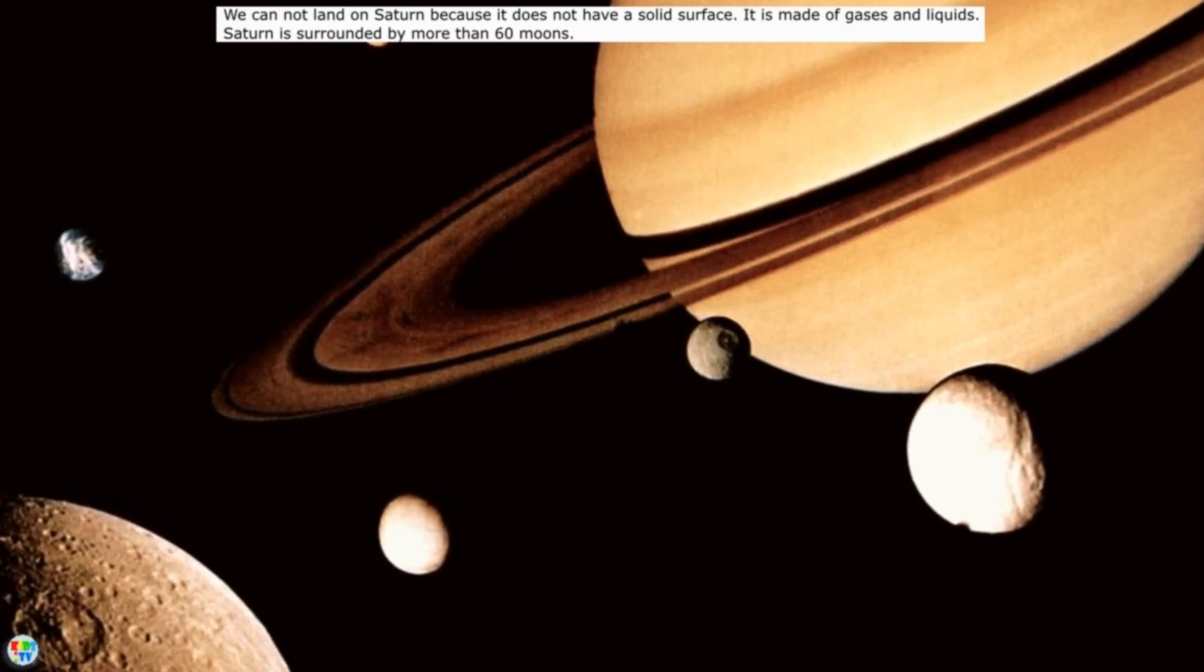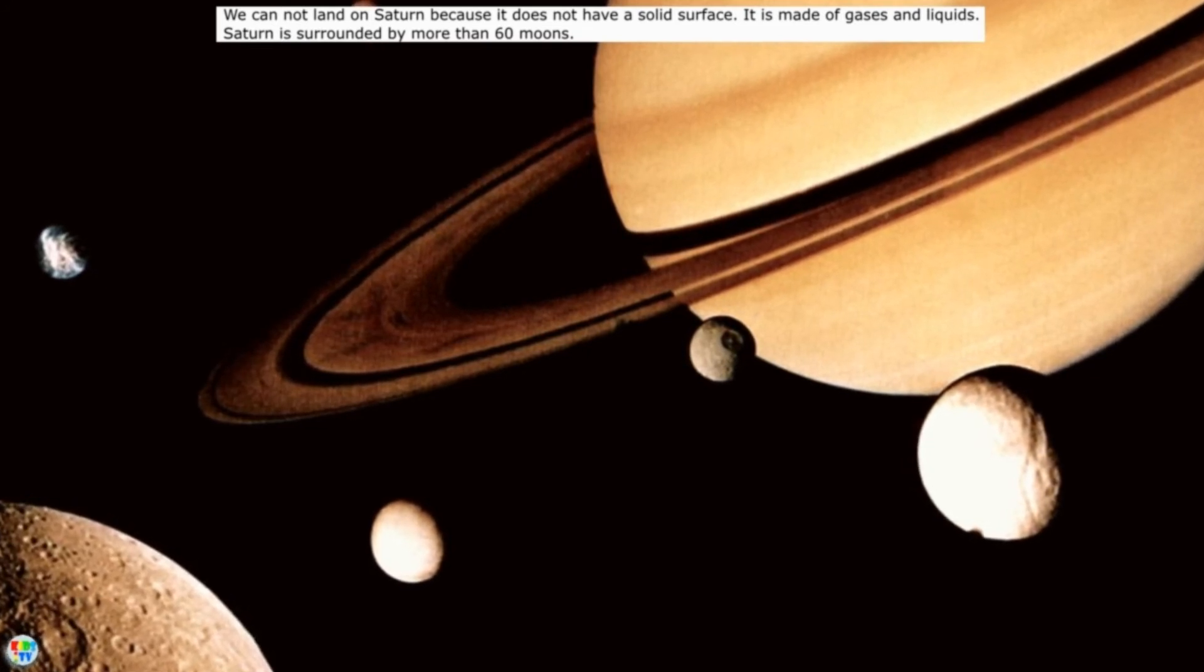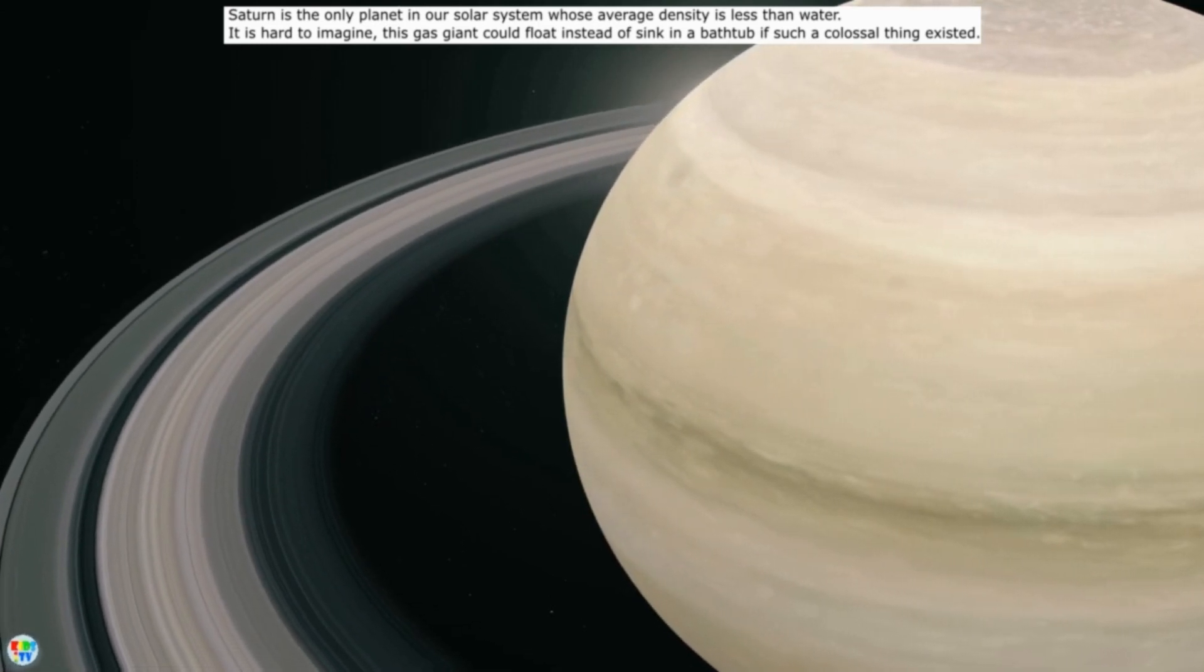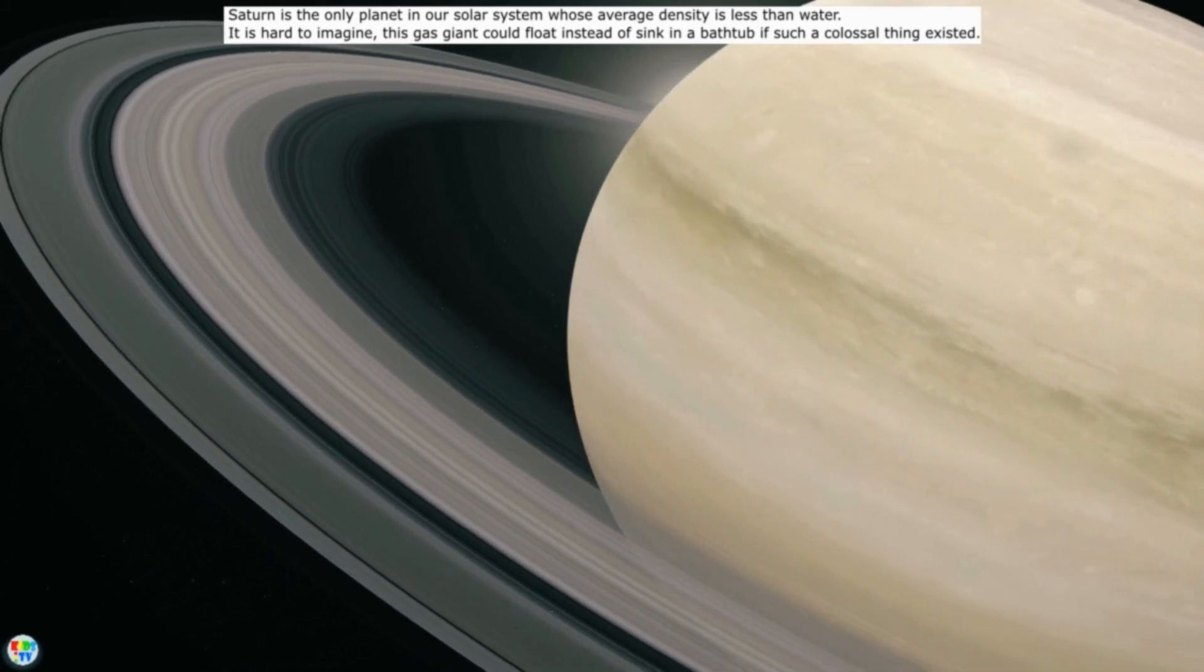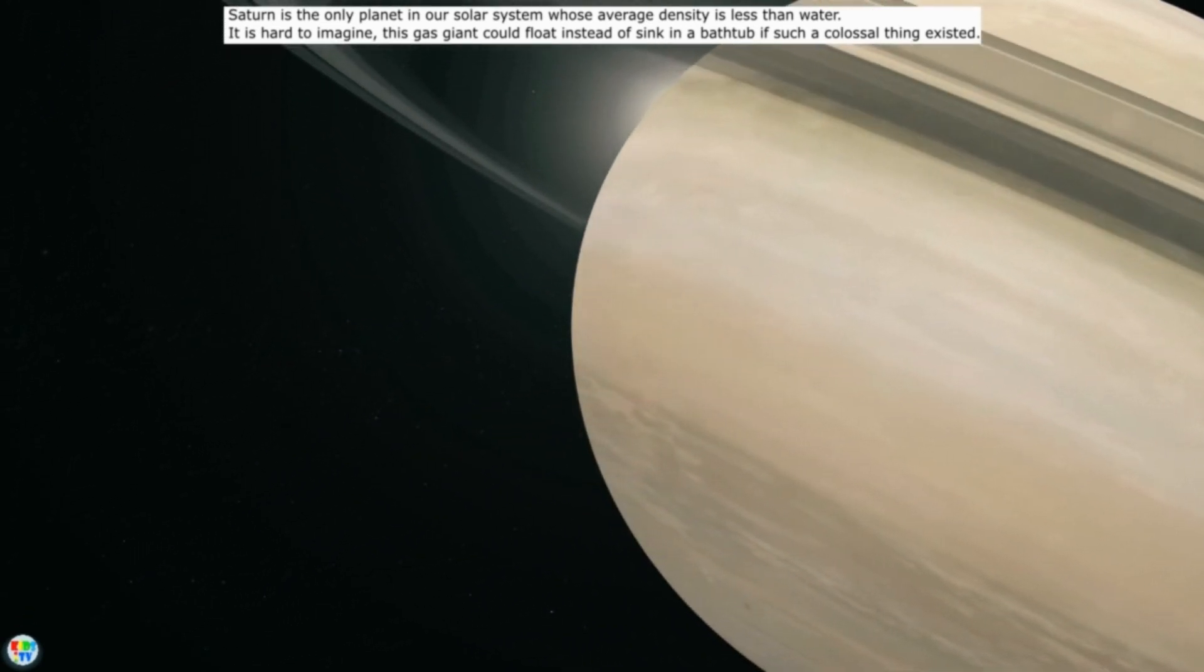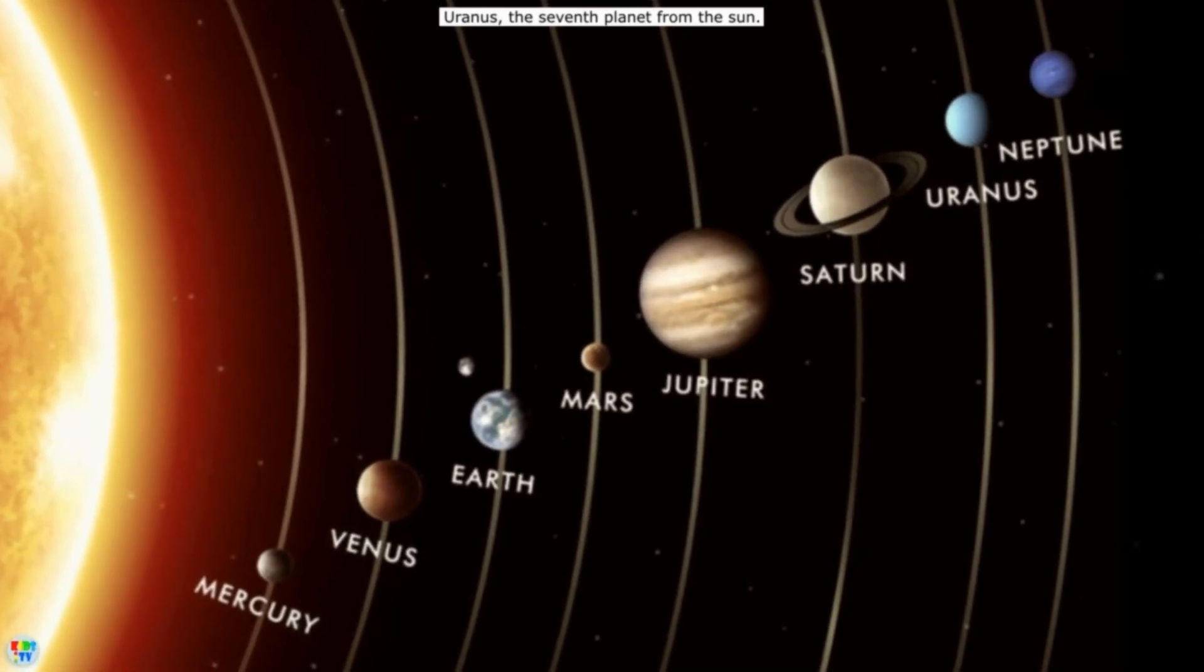Saturn is surrounded by more than 60 moons. Saturn is the only planet in our solar system whose average density is less than water. It is hard to imagine this gas giant could float instead of sink in a bathtub, if such a colossal thing existed.